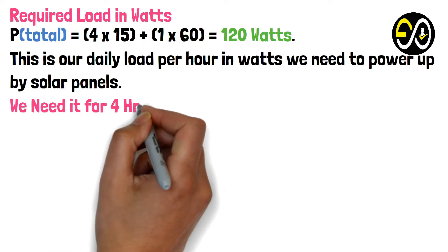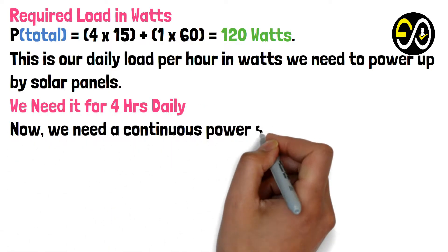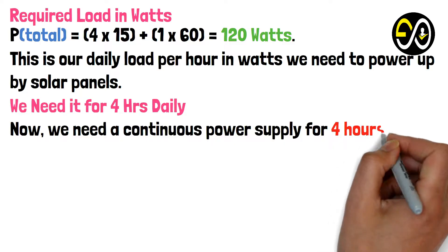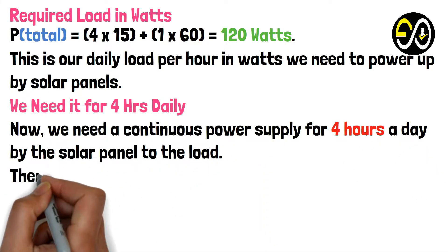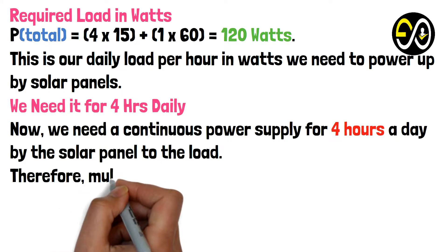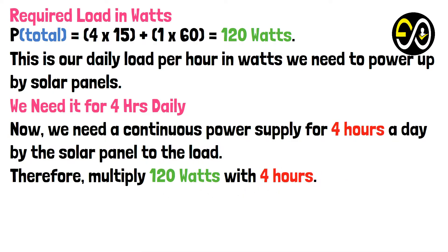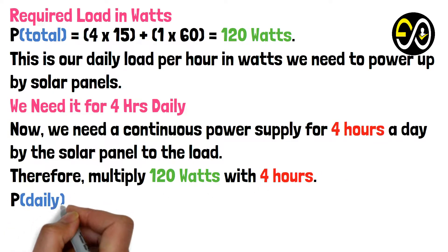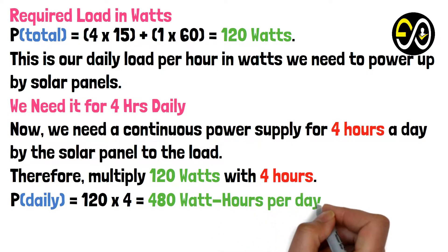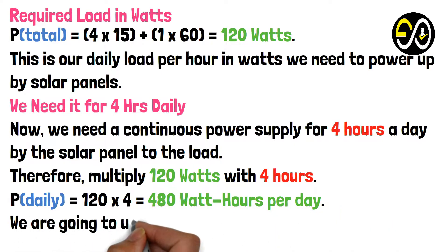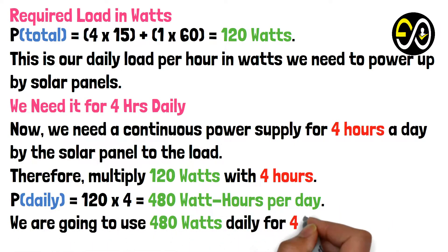We need a continuous power supply for four hours a day from the solar panel to the load. Therefore, we multiply 120 watts by four hours: P_daily = 120 × 4 = 480 watt-hours per day. We are going to use 480 watt-hours daily for four hours.